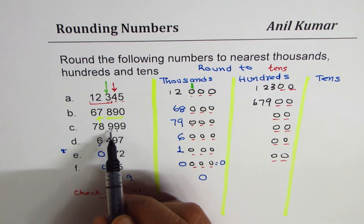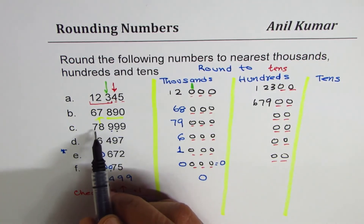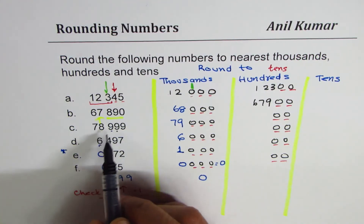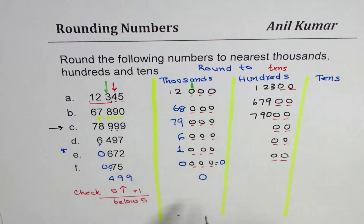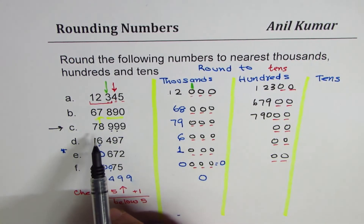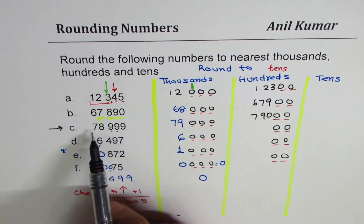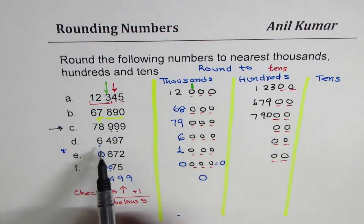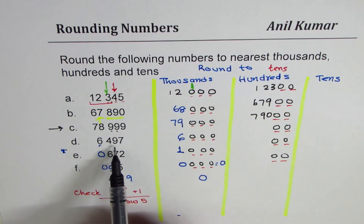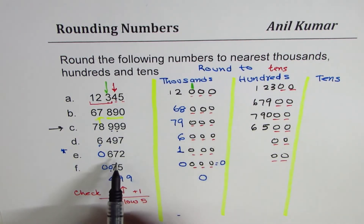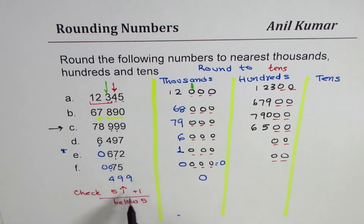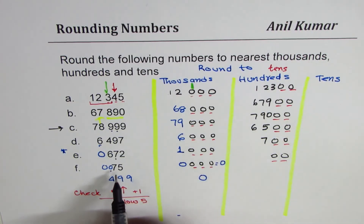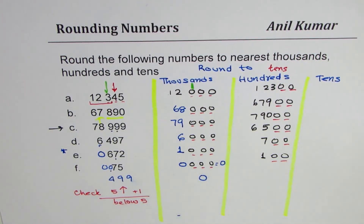For 6,497 — tens digit is nine, more than five, so increase six-four by one. It becomes 6,500. For 672 — check tens digit seven, which is five or more, so increase six by one — you get 700. For 75 — tens digit is seven, more than five, so it becomes 100.